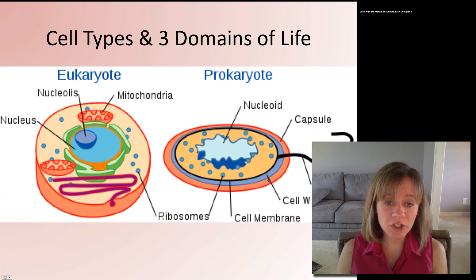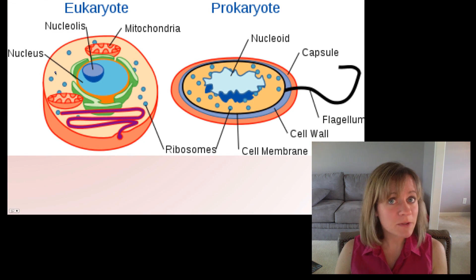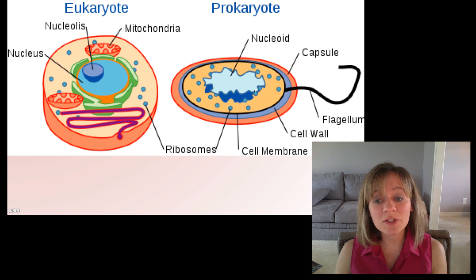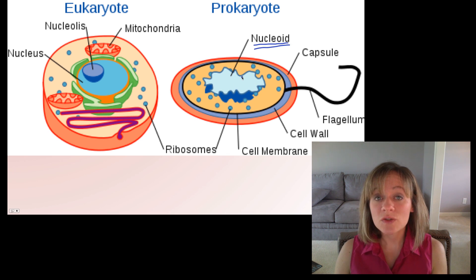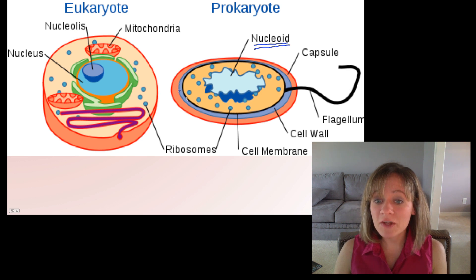Here is a figure showing the differences between eukaryotes and prokaryotes. Eukaryotes have a nucleus, all the organelles, and a plasma membrane but no cell wall. Prokaryotes don't have a nucleus; instead they have a nucleoid region where the DNA is kept. They do have ribosomes and a plasma membrane just like eukaryotes, but they also have an outer cell wall.